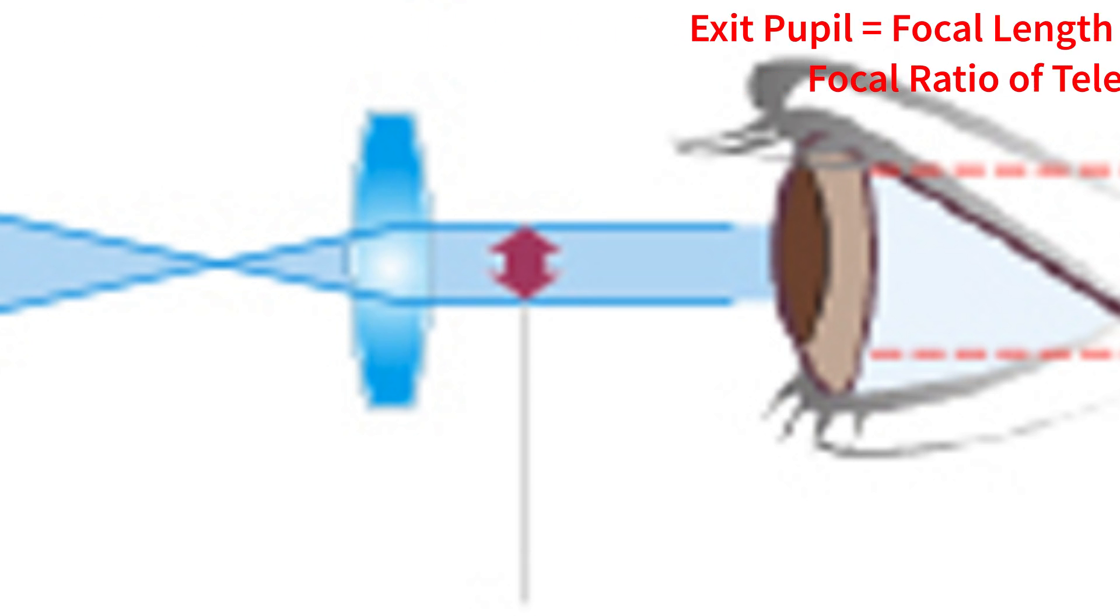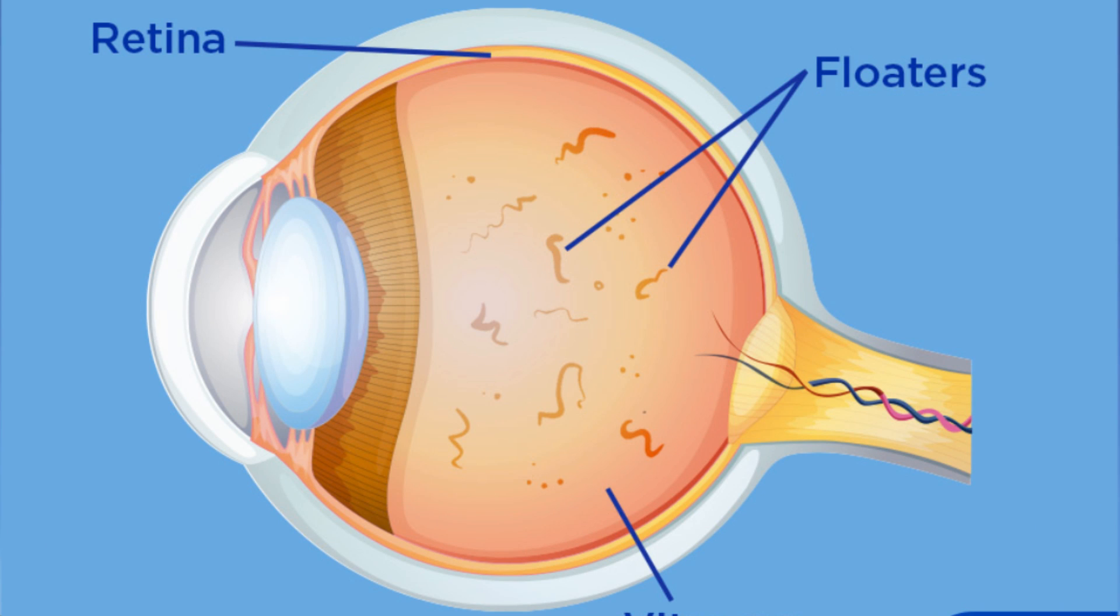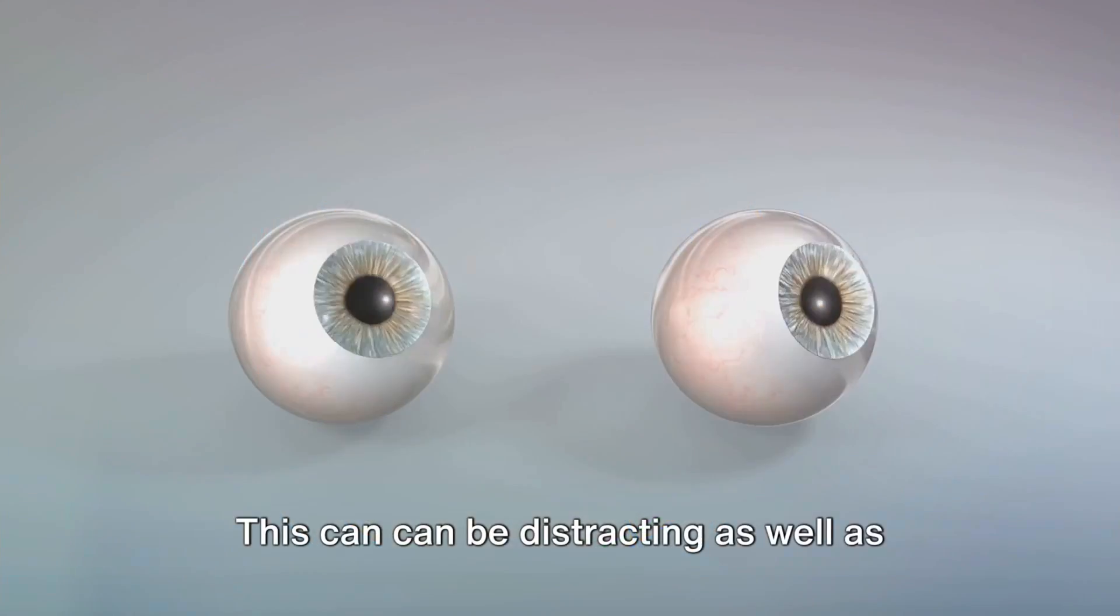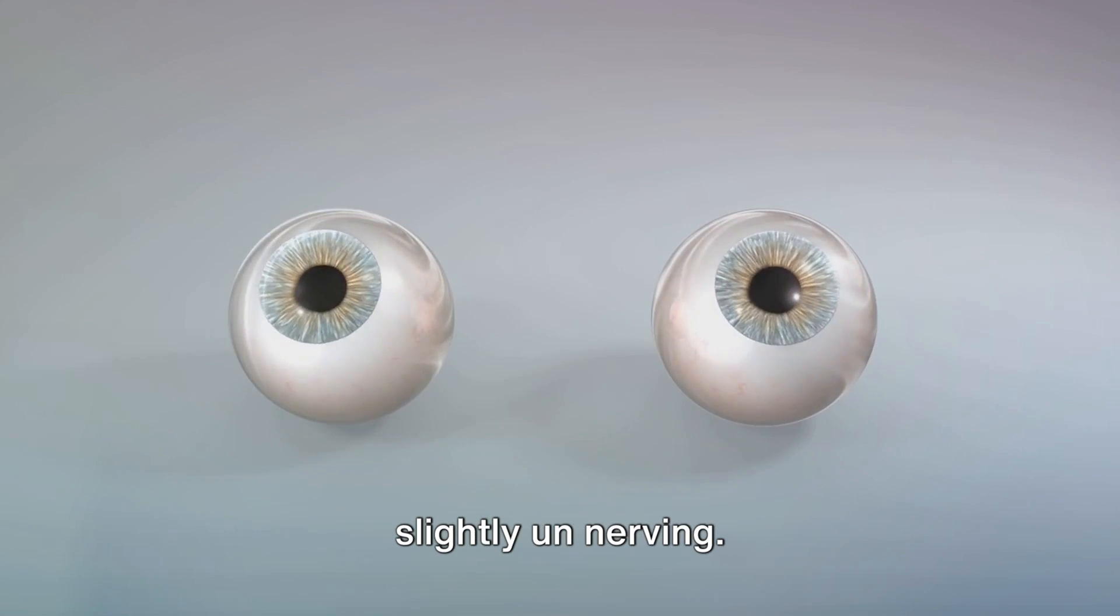If the exit pupil is below one millimeter, you might start to see eye floaters, fragments of protein floating inside the eye. This can be distracting as well as slightly unnerving.